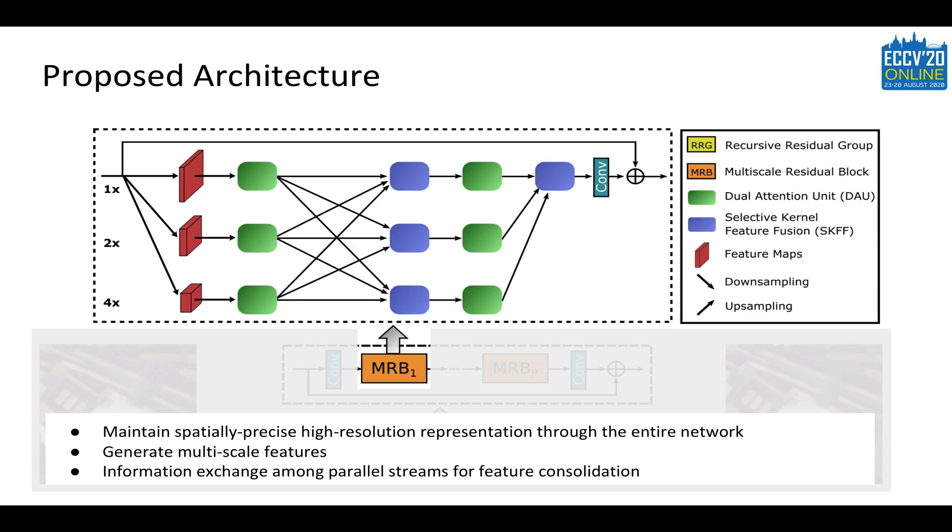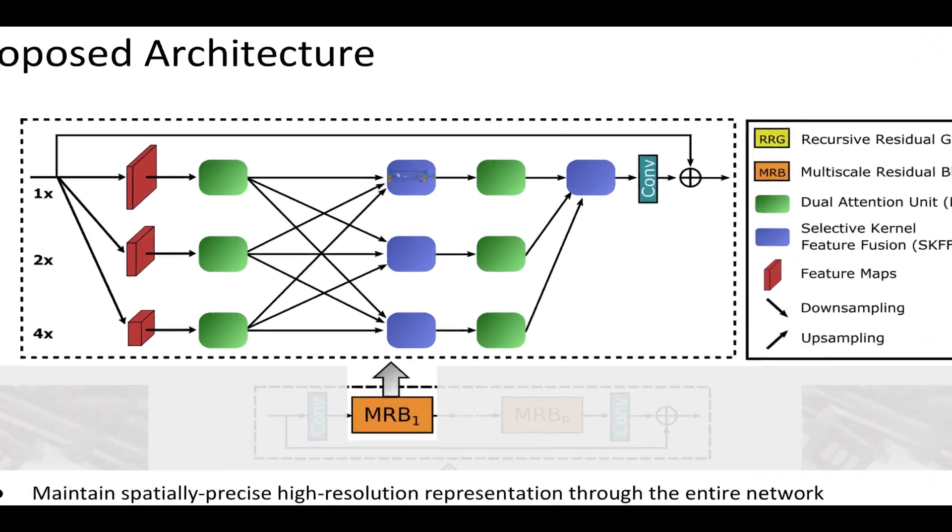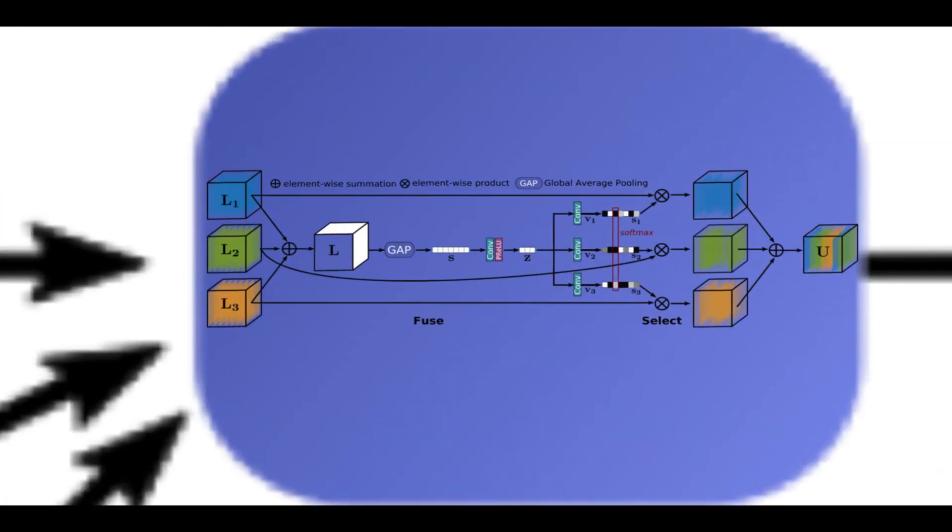In a nutshell, features at a given resolution level are harnessed with the help of features from the other resolution levels. In the blue block, feature aggregation is performed.